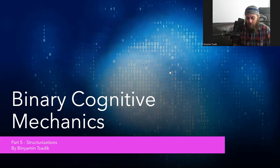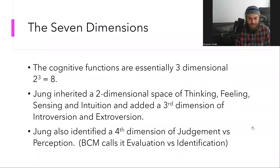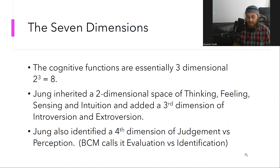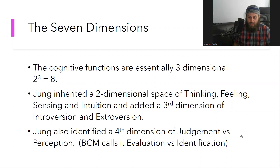So this is about structurizations — you'll see where it comes from. First of all, the seven dimensions. The cognitive functions are essentially three-dimensional, right? Two to the power of three is eight. Jung inherited a two-dimensional space: thinking, feeling, sensing, intuition — those are two dimensions, two to the power of two is four. And he added a third dimension of introversion and extroversion. That's how we got the three dimensions of the cognitive functions. But Jung also identified a fourth dimension of judgment versus perception. And so taking these four dimensions, we can extrapolate and get the other three dimensions. That's what I did in binary cognitive mechanics — I got up to five dimensions.